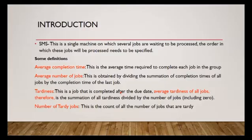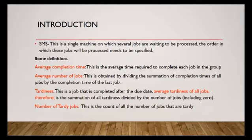Now, some key definitions. Average completion time is the average time required to complete each job in the group. And then the average number of jobs is obtained by dividing the summation of completion times of all jobs by the completion time of the last job.